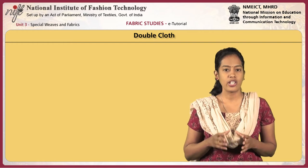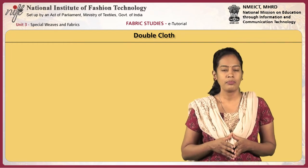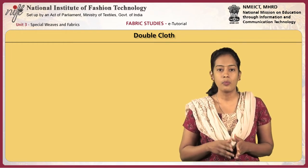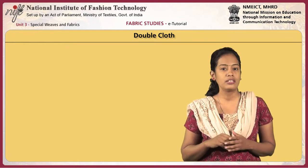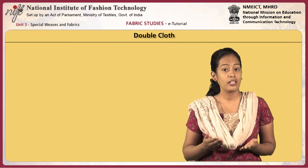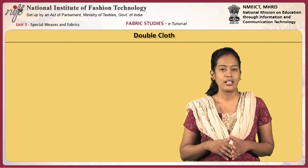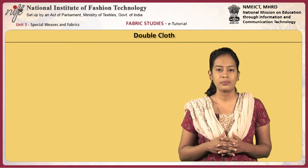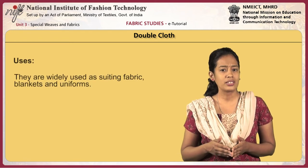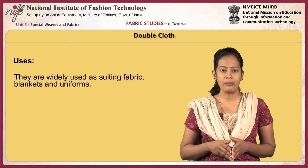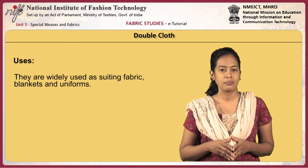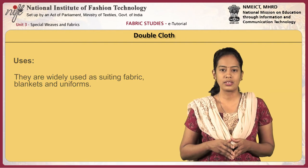They are generally produced as fabrics with two different surfaces. Hence, they are used as reversible garments. They are widely used as suiting fabrics, blankets, and uniforms.